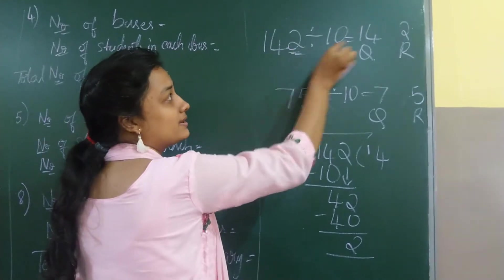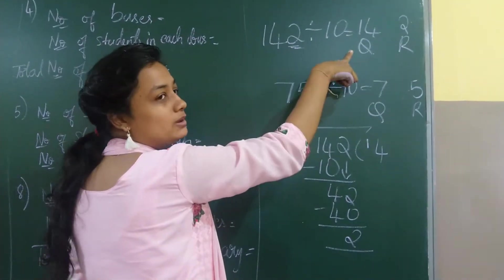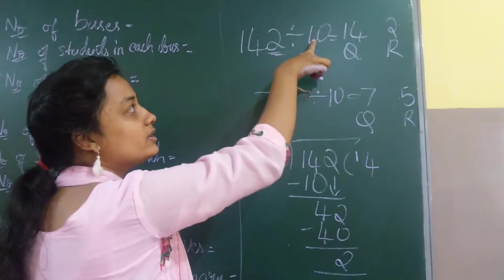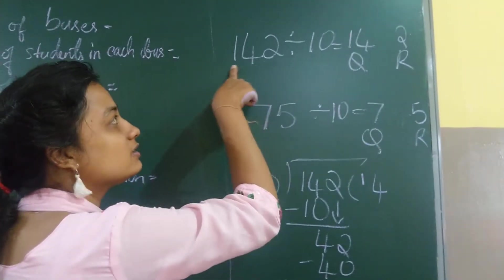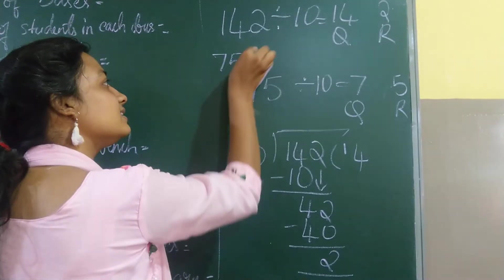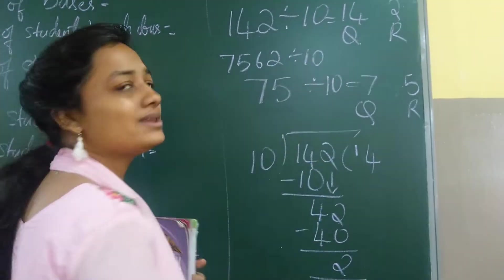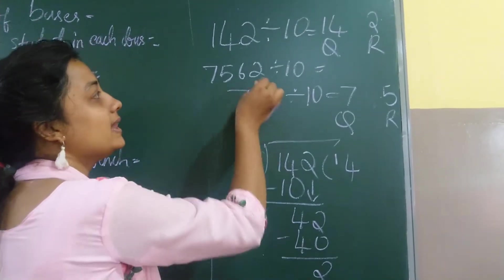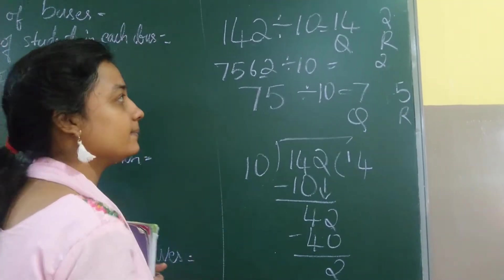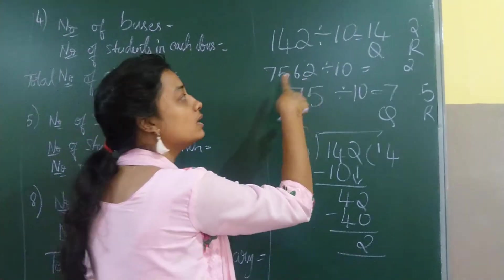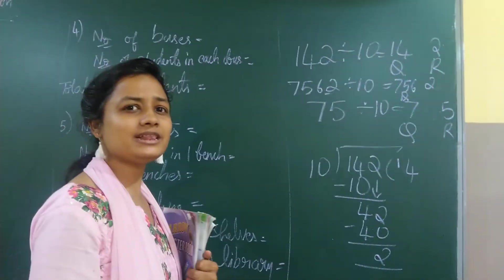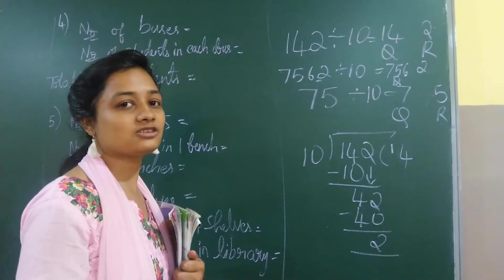If you see here, my last number is my remainder and my first numbers are my quotient. This is a small trick for directly writing the answer when you divide by 10. So when you divide by 10, the last digit will be my remainder and the remaining digits will be my quotient. For example, 7562 divided by 10: last number 2 is my remainder, and 756 is my quotient.